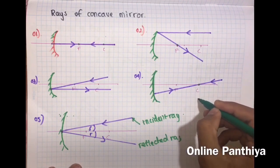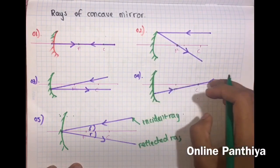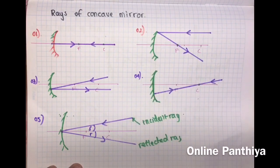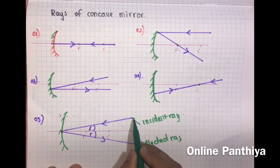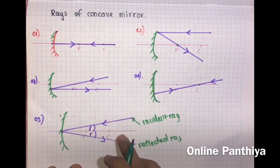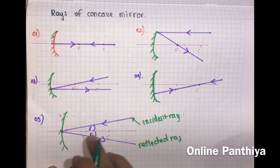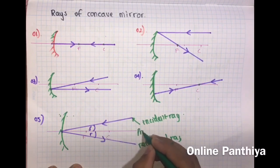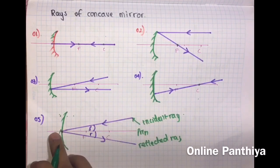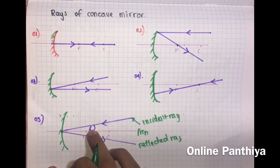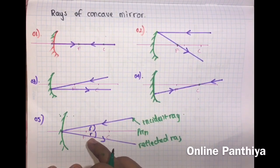A ray which comes through C will travel back through the same path — this is the same as for lenses. The last ray type for the concave mirror: a ray that strikes the pole at an angle with the principal axis will reflect through the same angle. The incident ray makes angle i with the principal axis and the reflected ray makes angle r, where i equals r.